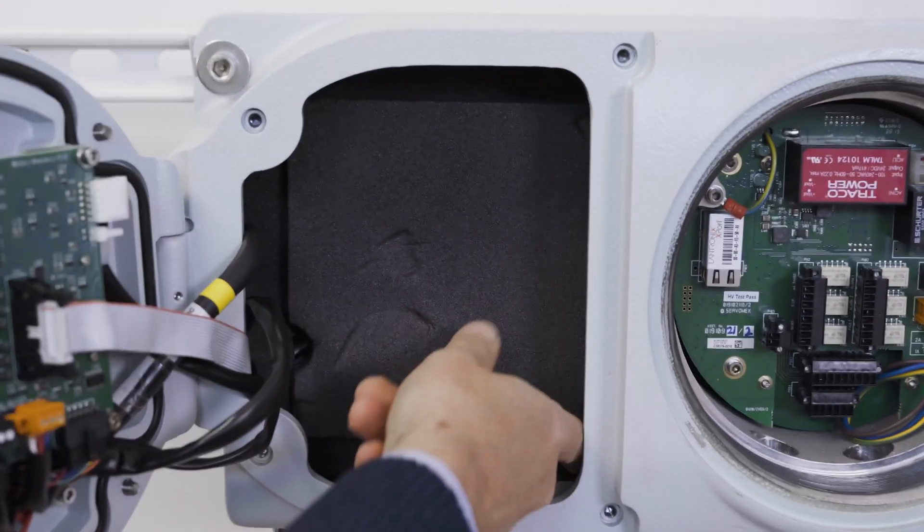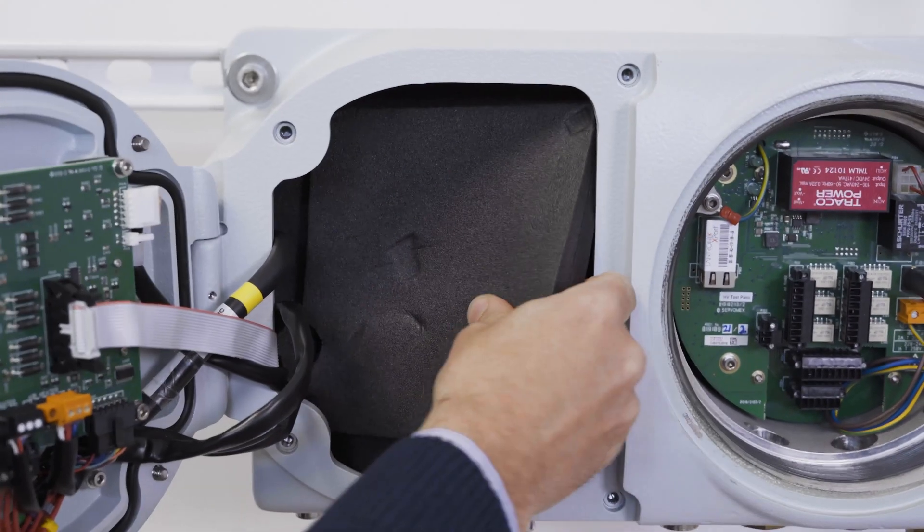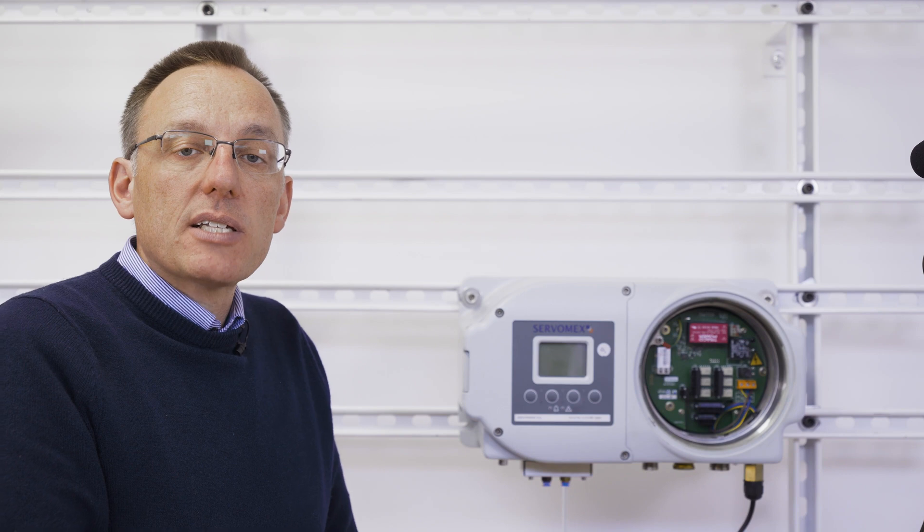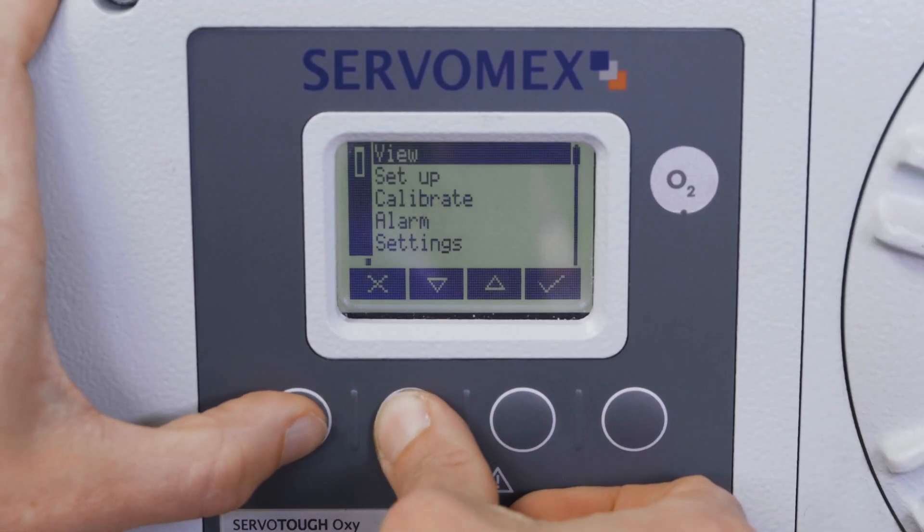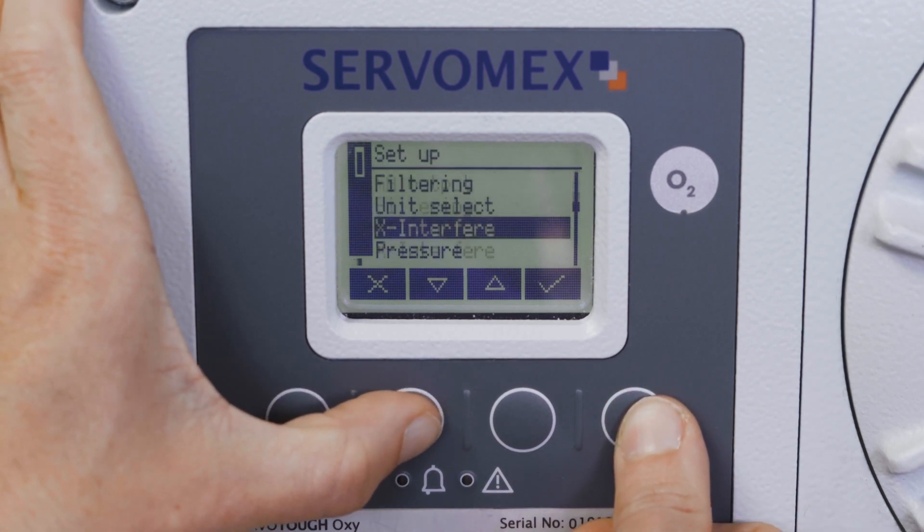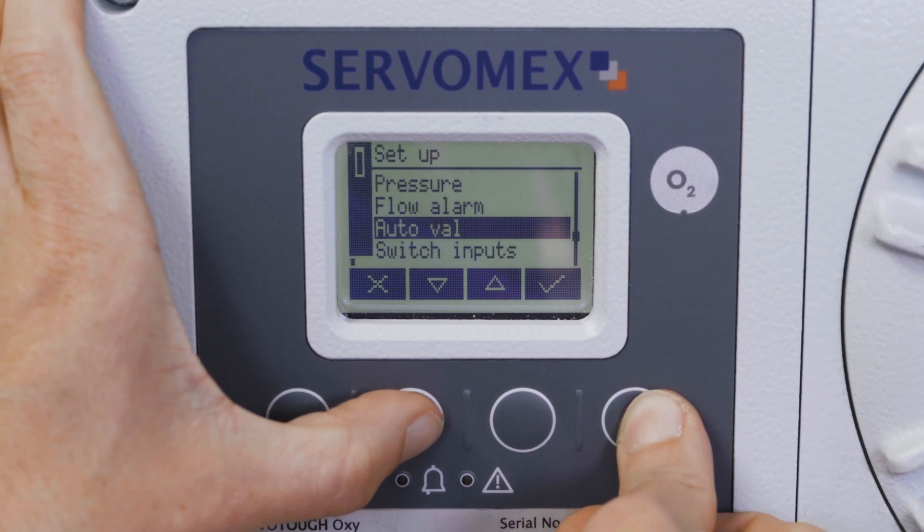The optimized design of the sample compartment with high levels of thermal insulation and the use of intrinsically safe heaters means that the Oxy 1900 has a low electrical operating power requirement. Its modern user interface with a clear LCD display and adjustable backlight makes it easy to use via an intuitive and simple menu system.